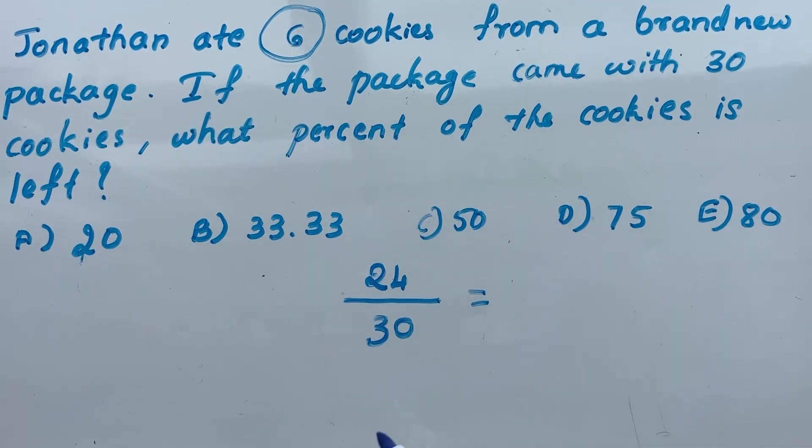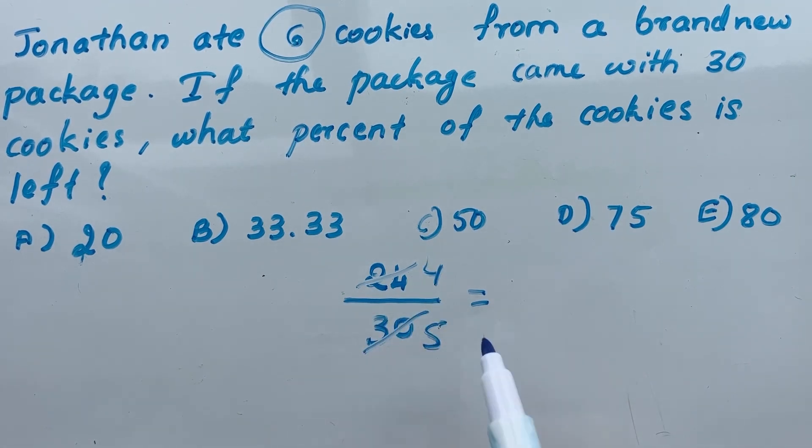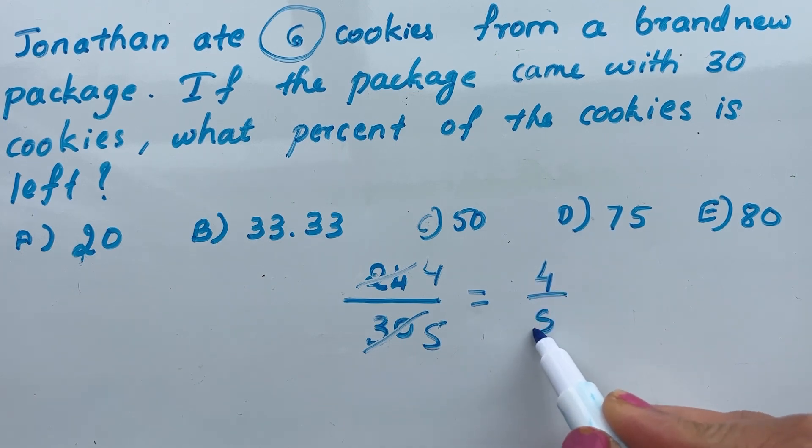Now, 24 and 30 are both divisible by 6. 6 times 4 is 24, and 6 times 5 is 30. So 24 out of 30, when simplified, gives us 4/5.